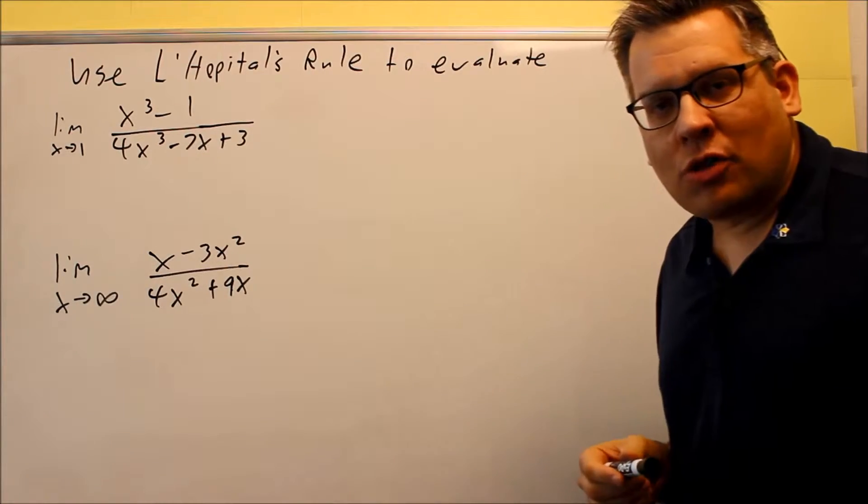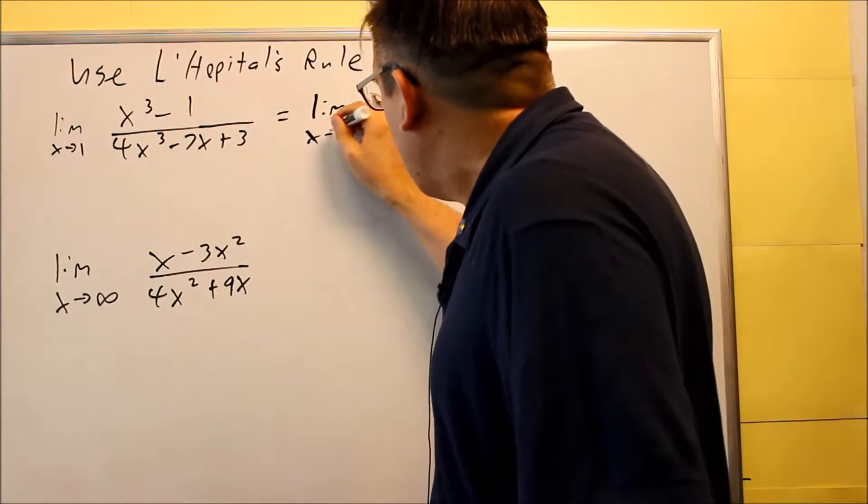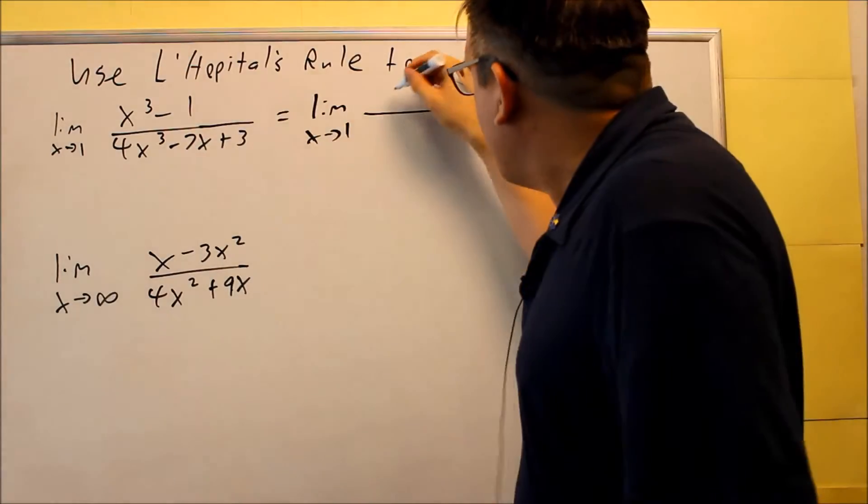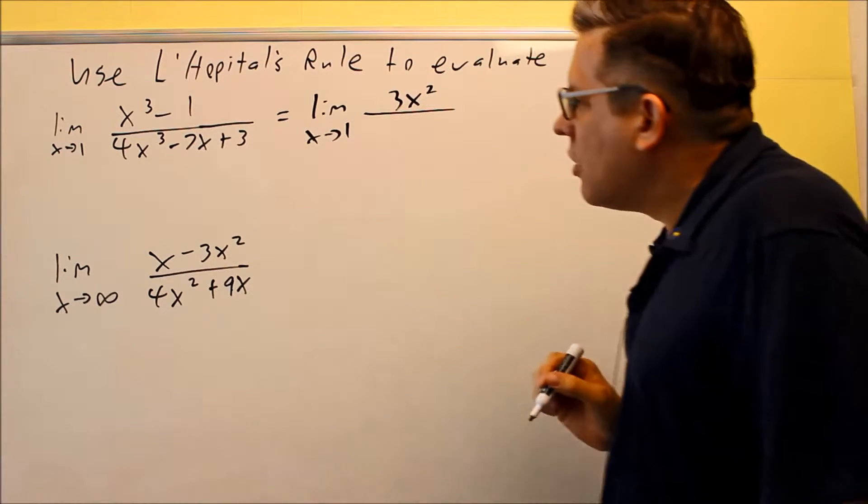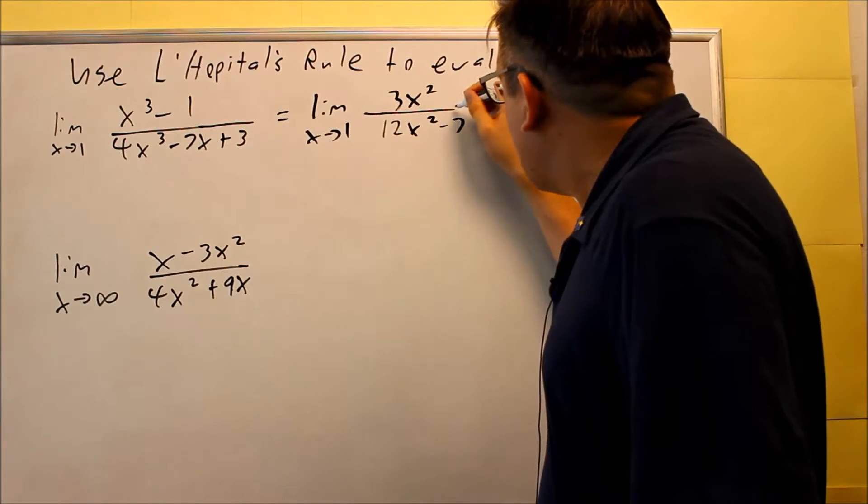That means that L'Hôpital's can be applied. So what you do there is you're going to take the derivative of the top and bottom. So the top, three comes down, you get 3x². On the bottom we'll use power rule for that also, 12x² minus 7.